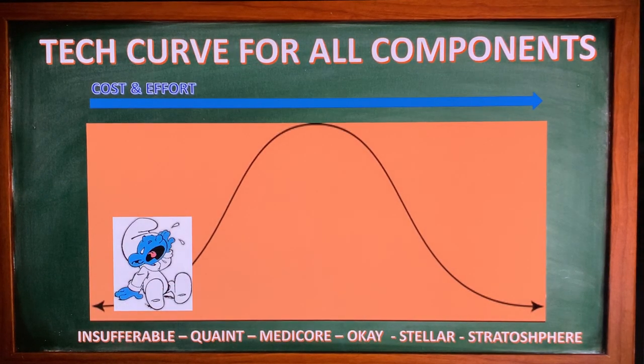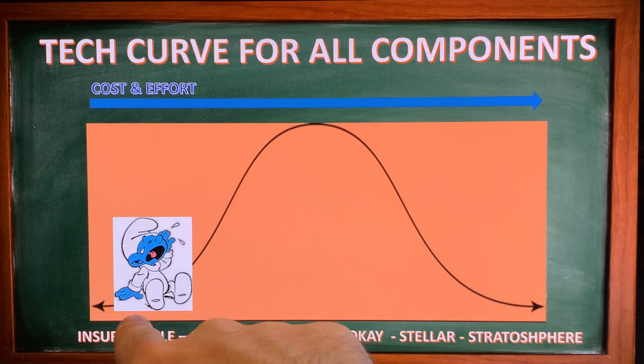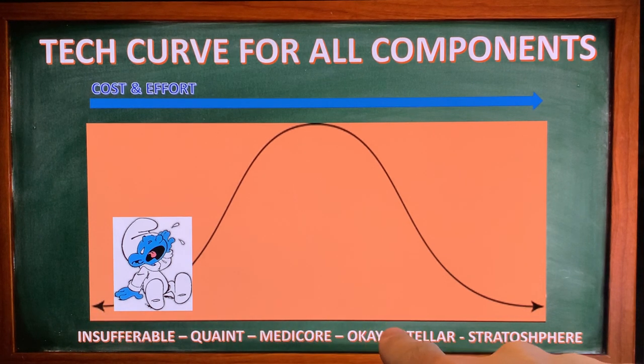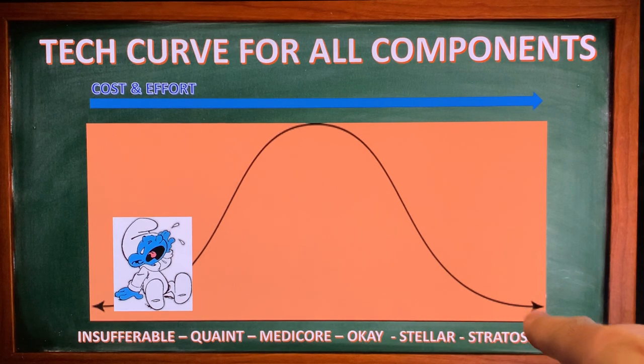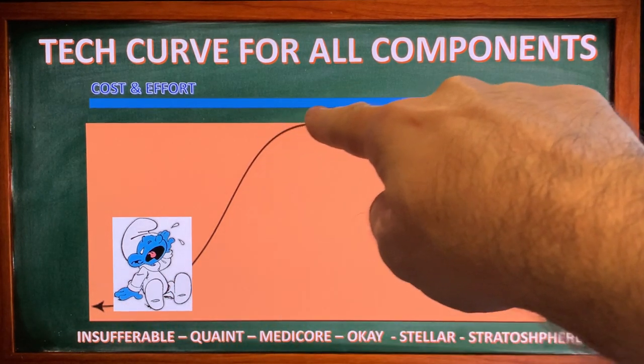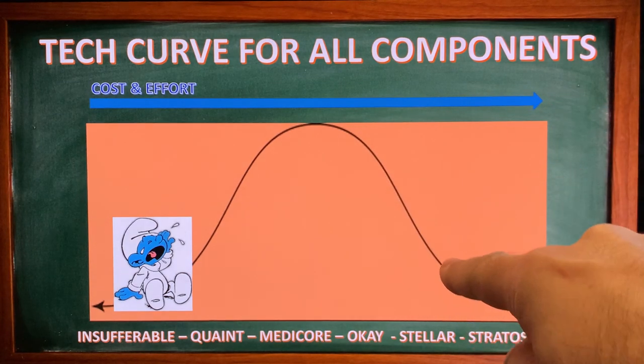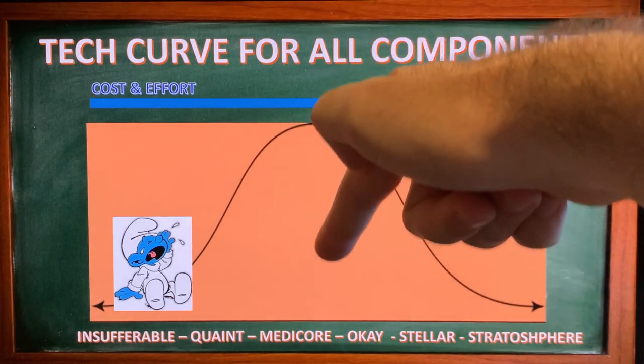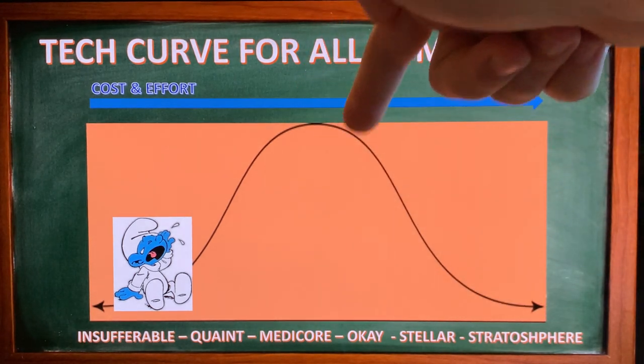So here we are, when you increase the cost and the effort that you put into making a system component, let's say a loudspeaker, then there is a curve of quality. So you go from here, there is an insufferable, poor quality, and then quaint, mediocre, okay, stellar and stratospheric. And when you look at how many equipment, how many pieces of equipment belong to that category, you will see that the majority of audio gear could be described as somewhere between mediocre and okay.